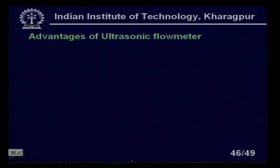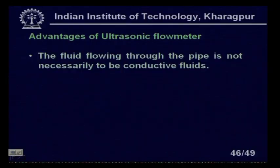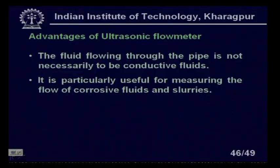The advantages of ultrasonic flow meters in general are: the fluid does not need to be electrically conducting — unlike the electromagnetic flow meter — making it particularly useful for corrosive fluids and slurries regardless of conductivity. It is a non-invasive method with significant advantages: it clamps on externally to existing pipe rather than being inserted as an integral part of the flow line.